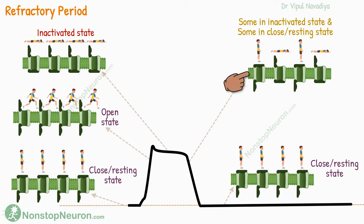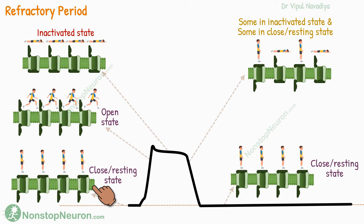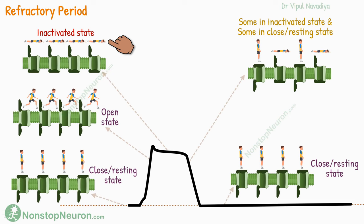Then they start to return to the initial closed state, and eventually all of them are ready to run again. The important thing to note here is that the channels can take an open configuration only from the resting state. The inactivated channels cannot open directly — first they have to take a resting configuration, and then only they can open. It's like sleeping boys cannot start running right away; they need to stand up first.